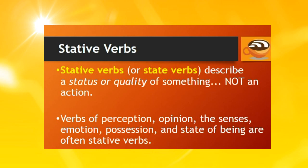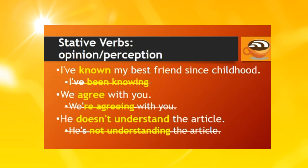Stative verbs or state verbs describe a status or quality of something, not an action. Verbs of perception, opinion, the senses, emotion, possession, and state of being are often stative verbs. Stative verbs cannot be used in continuous form. Here are some examples of stative verbs with opinion or perception. I've known my best friend since childhood — don't say 'I've been knowing.' We agree with you — don't say 'we're agreeing with you.'